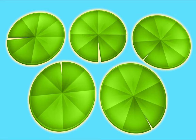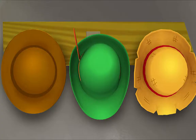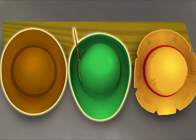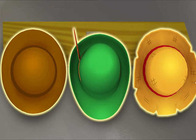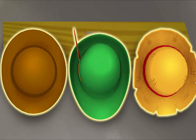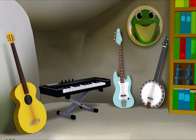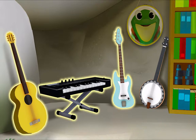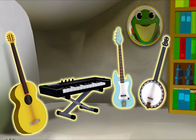Five lily pads! Now let's count Mr. Frog's hats together. One, two, three. How many in all? Three? Yeah, you got it! Now you try, Hedgehog. Count the musical instruments. Okay. One, two, three, four. So how many in all? Four.